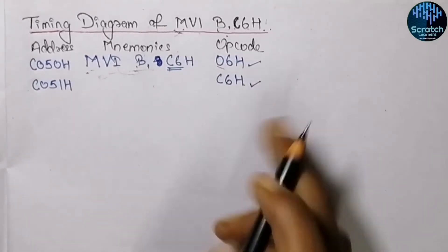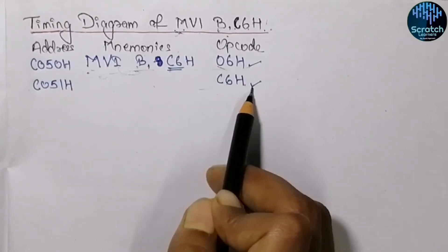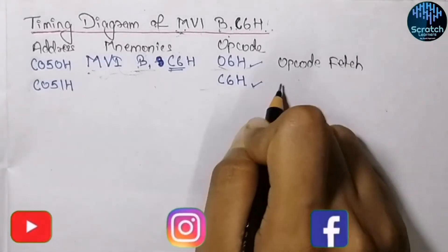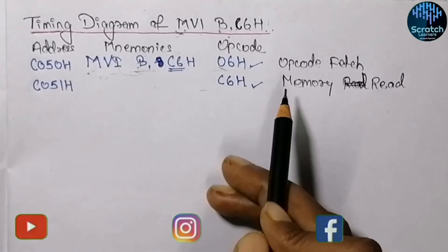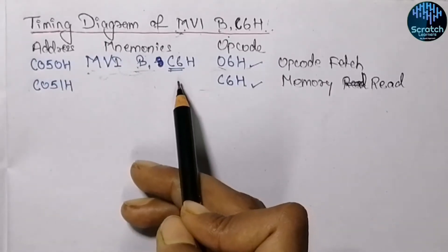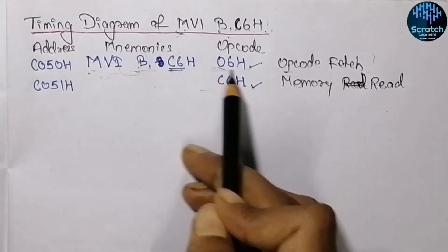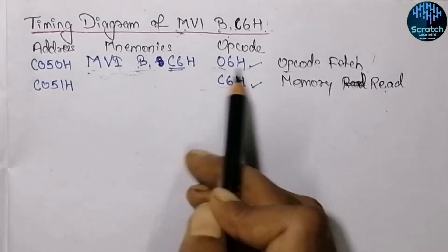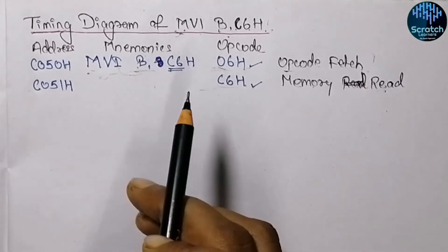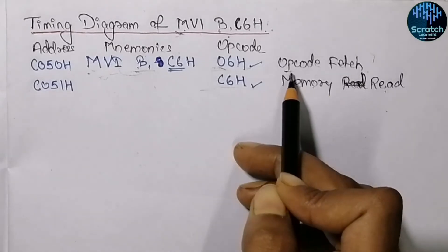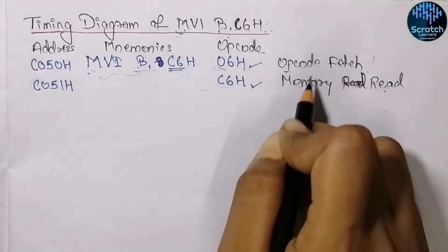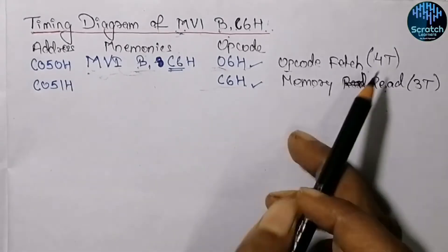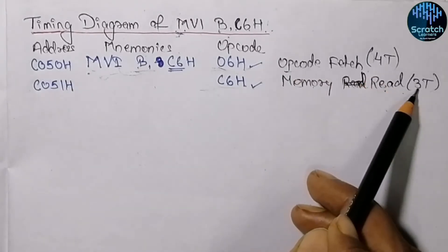The 8085 microprocessor needs two machine cycles to read these two bytes from memory. The first machine cycle will be the opcode fetch cycle and the second machine cycle will be the memory read cycle. Before executing any instruction, we first need to fetch the opcode, which represents what instruction is going to be performed. The second machine cycle is memory read because the data is going to be read from memory into the microprocessor. The opcode fetch cycle needs four T-states and the memory read cycle needs three T-states, so in total the MVI instruction uses four plus three, that is seven T-states.